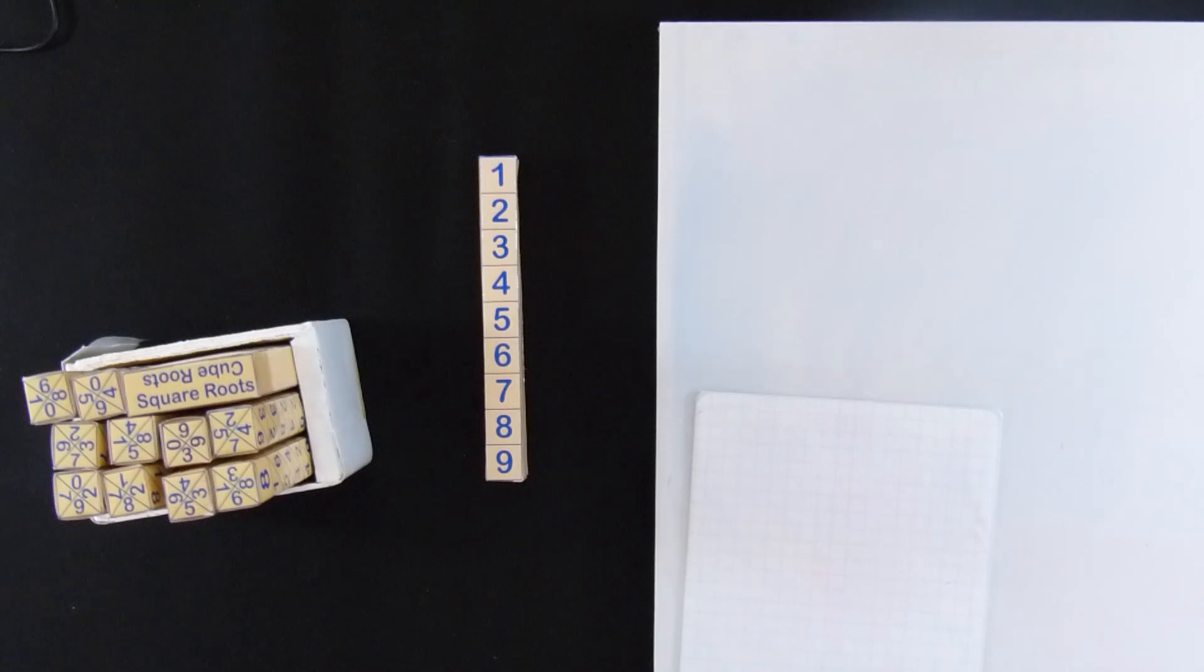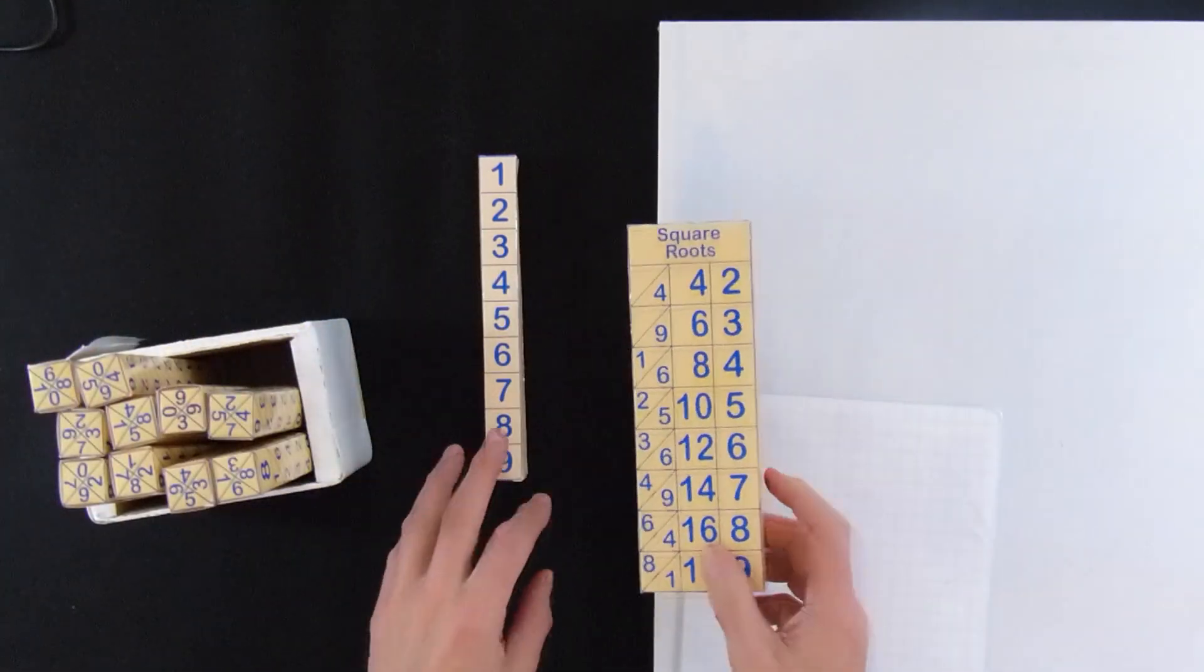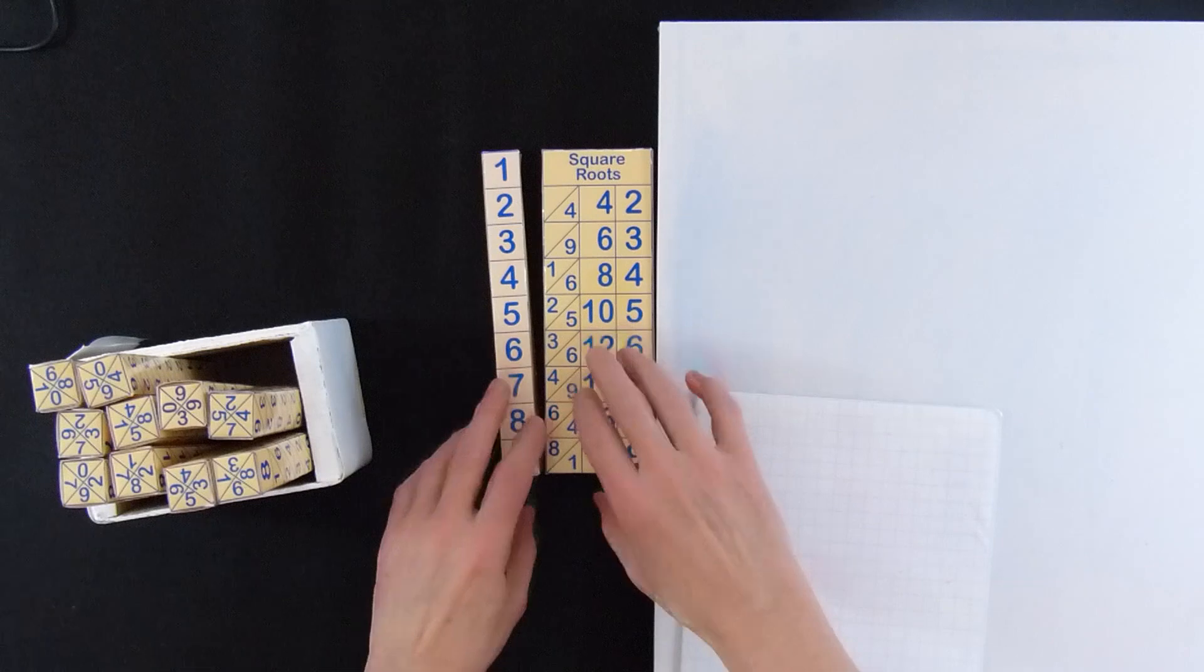In this video I'm going to show you how to do square roots using Napier's bones. For most of you, you'll not think that you could possibly do square roots without an actual calculator or using a set of tables, but you can quite simply using Napier's bones. For this one, we're going to have to use the actual square root bone.